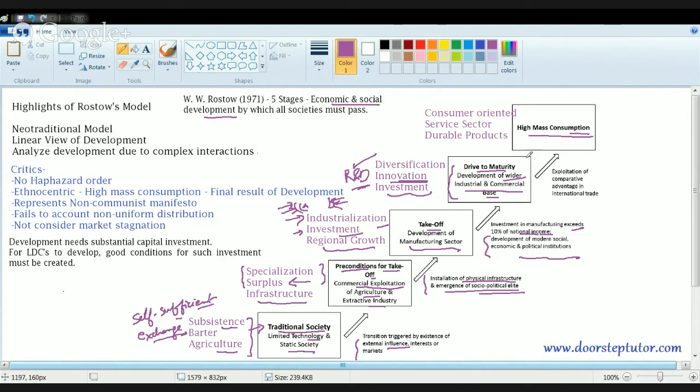Finally, all this drive to maturity led to stage four, high mass consumption. There was exploitation of comparative advantage in international trade. That means the society became consumer oriented. They started providing people exactly what they are looking for. The service sector started to develop. So now in present USA, what is the most strong pillar of the country is the service sector. You have more flourishing of durable products. So this is how Rostow in his model in 1971 explained the various stages in economic growth. These were the five stages.